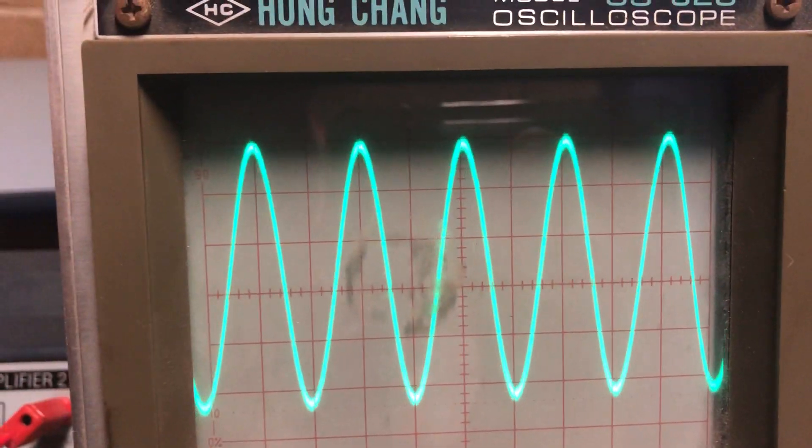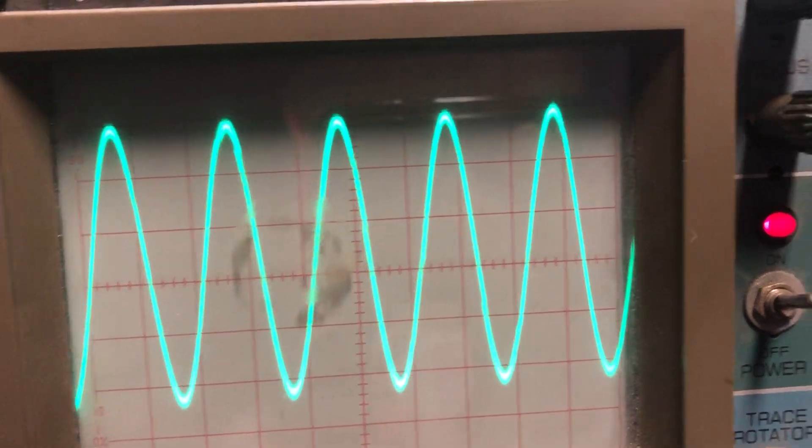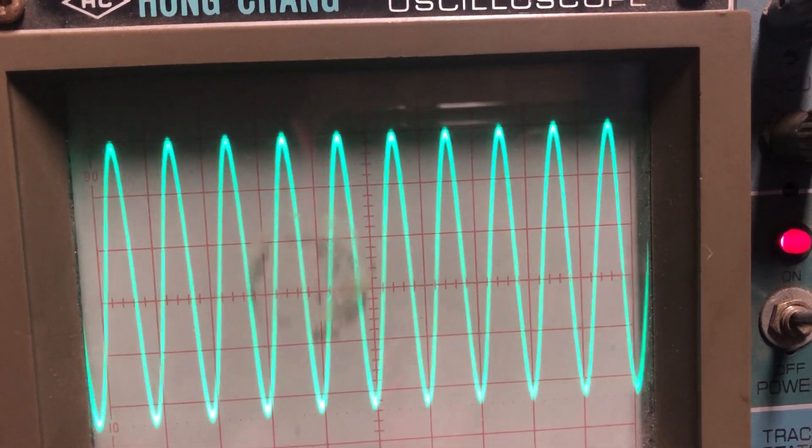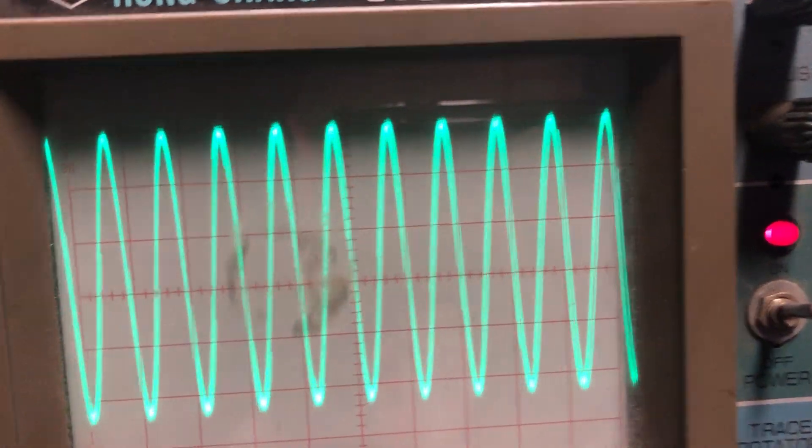I've doubled the 640 and we're at 1280. Because the volume hasn't changed, the amplitude hasn't changed.